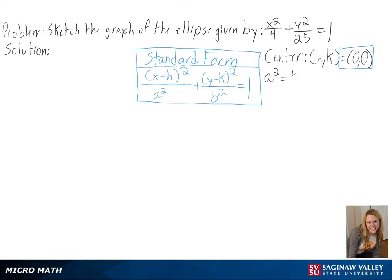Next, we need to figure out a and b since they will determine our vertices. For a, we get 2, so we will be going left and right 2 units. And for b, we get 5, so we will be going up and down 5 units.